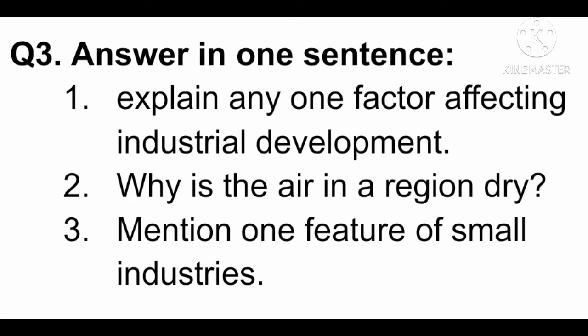Question number 3: Answer in one sentence. First: Explain any one factor affecting industrial development. Second: Why is the air in a region dry? Third: Mention one feature of small industries. Students, let me remind you — we can ask 'answer briefly' or 'give reasons' type of questions in the exam. That doesn't mean you have to type any answers. The points will be given to you below; if a question carries one mark, one point will be correct where you have to put a tick. If there are two marks, please read what's in the bracket — you have to click any two points or any one point accordingly, and tick mark the correct options as per the marks given.